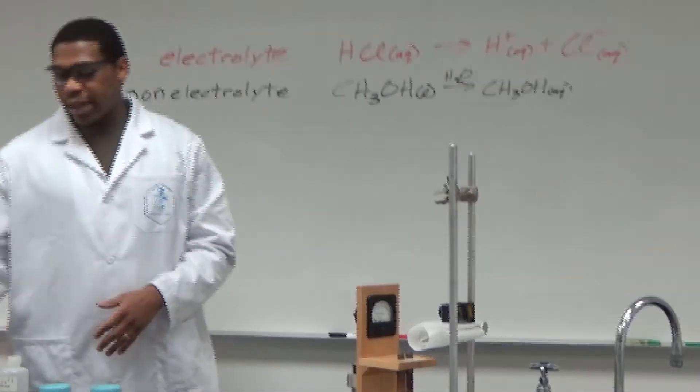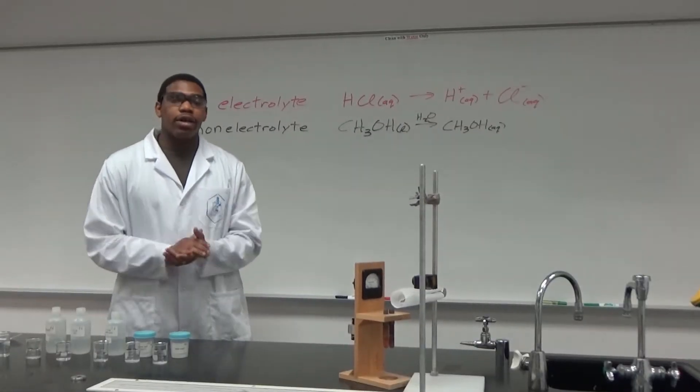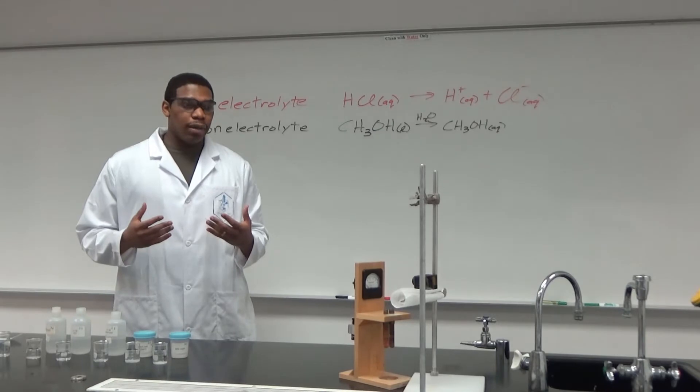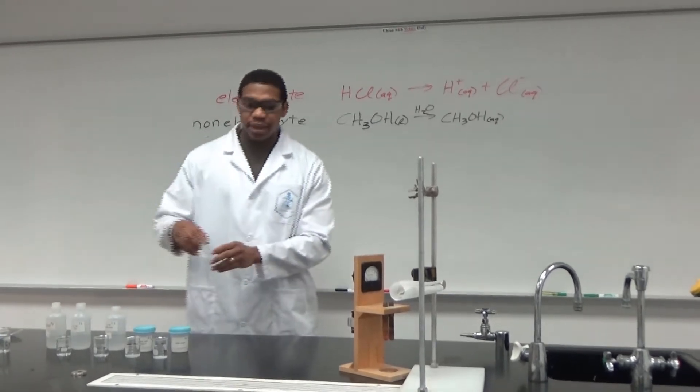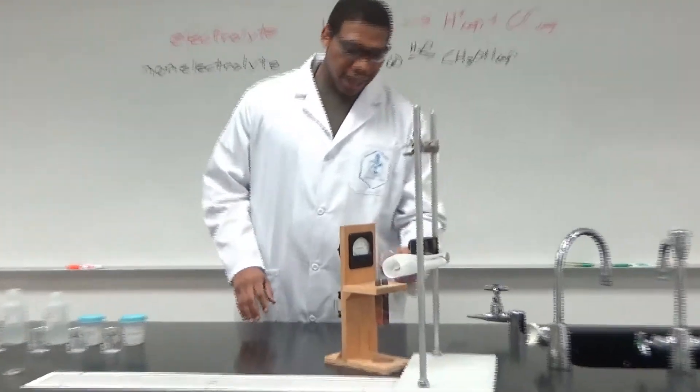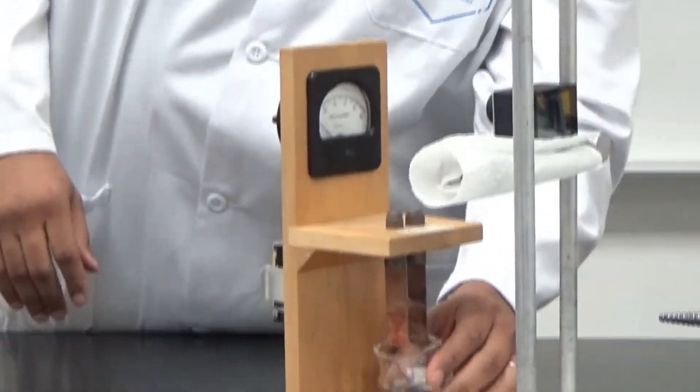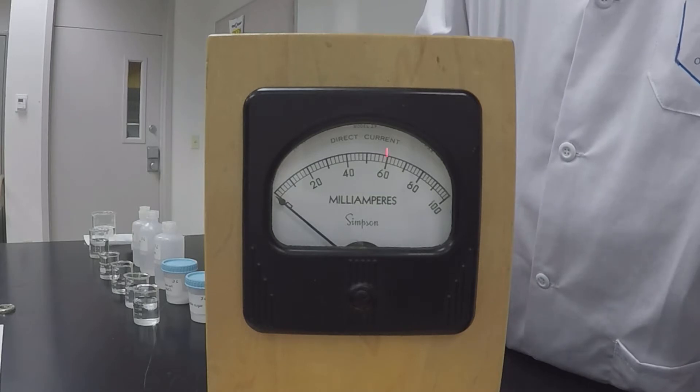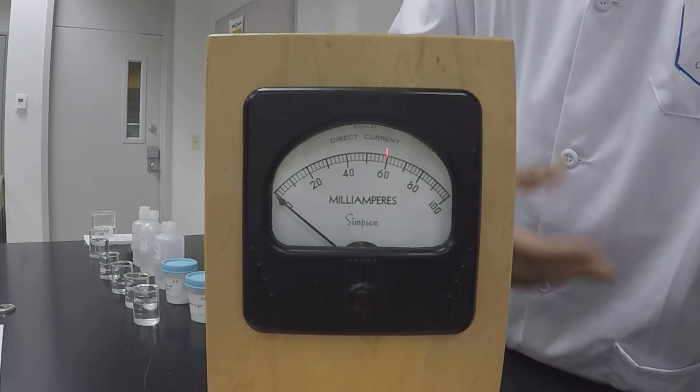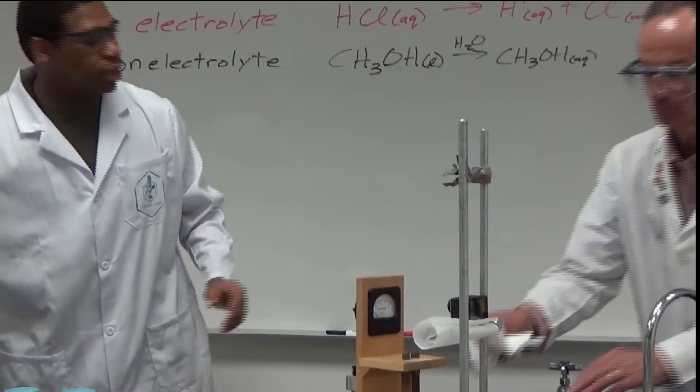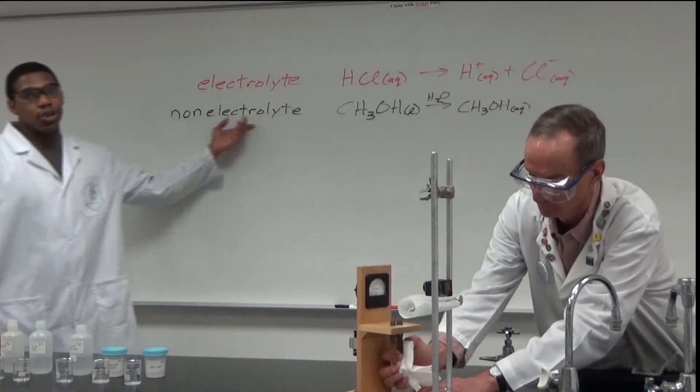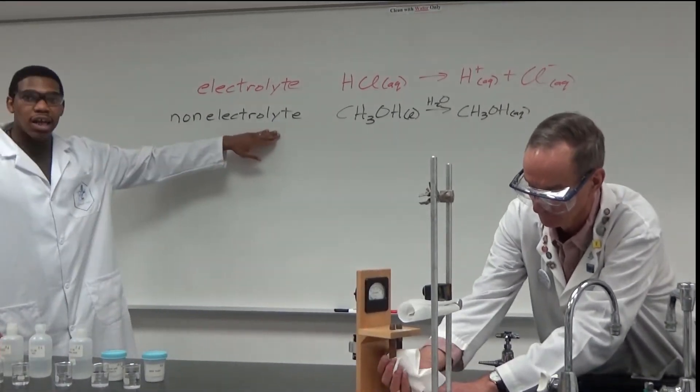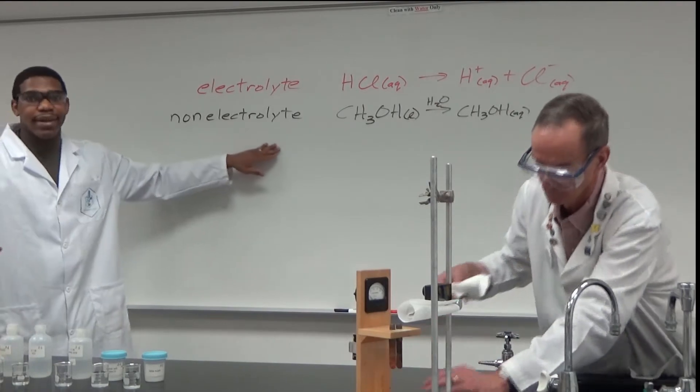Because of that, it does not have any ability to generate movement of ions. So if we take this methanol solution and place it inside this conductivity meter, as you can see, there's no movement of the arrow. This solution is not conductive. What we would call this is a non-electrolyte solution. Non-electrolyte means that it's not conductive.